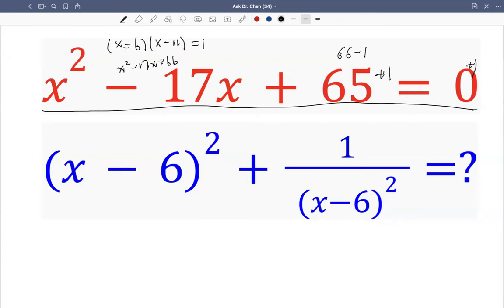Why is this good? Because we have constructed x minus 6. Then we can rewrite this one. So what is 1 over x minus 6? 1 over x minus 6, that just equals x minus 11. All right, so we want to use this relation.